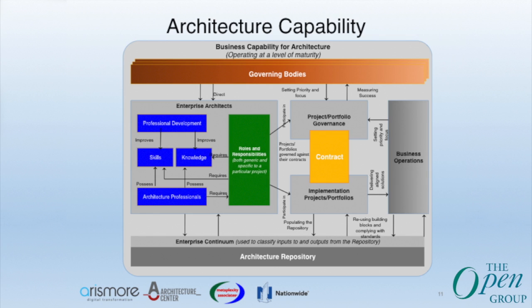We have the architecture capability, where on the left-hand side we have the architecture staff, in the middle the project management and implementation teams working on architecture contracts, and on the right the operations people. We'd like to see this recirculating so that operations people can talk to the architects. At the very top, the whole thing is governed by a network of governance structures like IT governance, architecture governance, and in some cases even corporate governance.